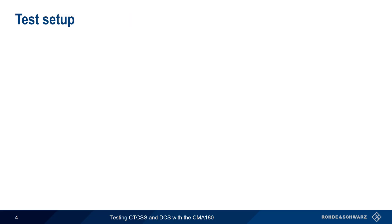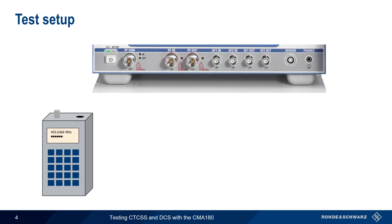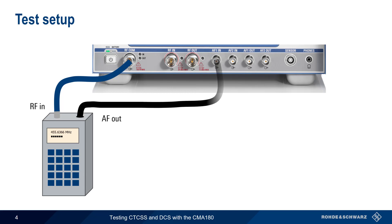Depending on our test type, we have to make either one or two connections from our radio to the CMA180. Both transmit and receive tests require a connection between RF-COM and the antenna connector on the radio — this connection carries the modulated RF signal. The second connection is from the audio out of the radio to AF1 in on the CMA180, and is only required for receive tests, carrying the demodulated audio signal from the radio back into the CMA180 for analysis.